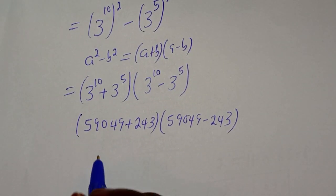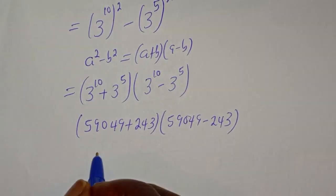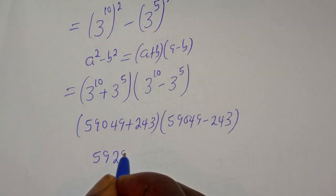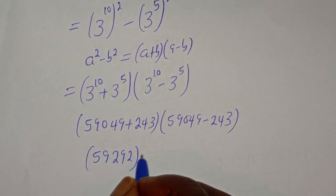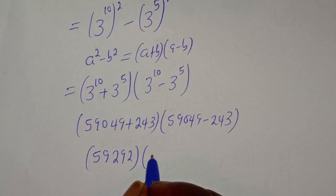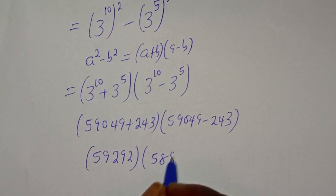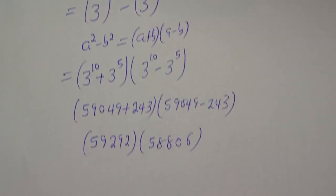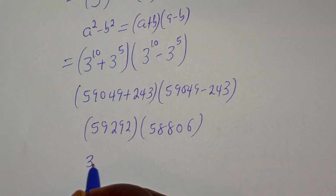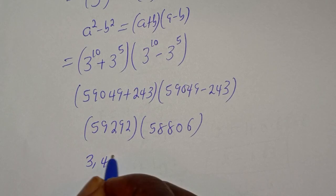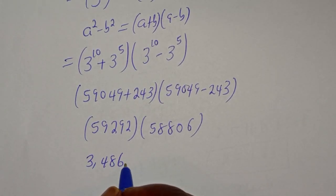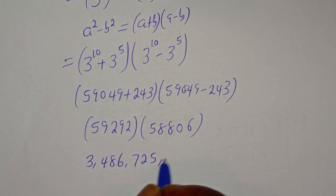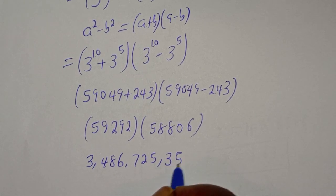So this is 59,292 bracket 58,806. And if you multiply the two together, we have 3,486,725,352.